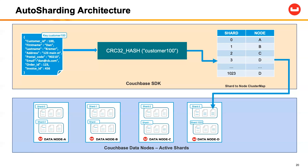Conversely, if instead of a four-node cluster, we add a node because of performance considerations or resource utilization, that's considered what we call a topology change. So we're going from a four-node Couchbase cluster to a five-node Couchbase cluster. That shard 3, now resident on data node D in a four-node cluster, may be resharded — redistributed — so that shard 3 will now be resident on data node E, the fifth node. Any topology change to the Couchbase cluster will update the shard-to-node cluster map.